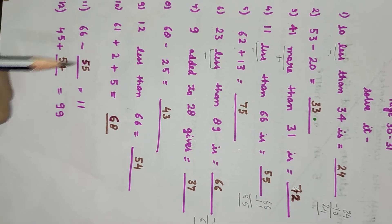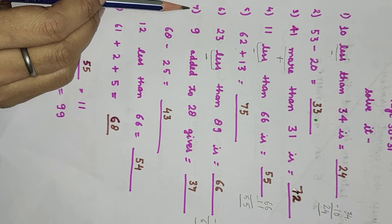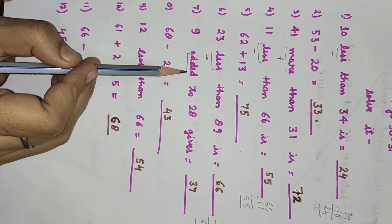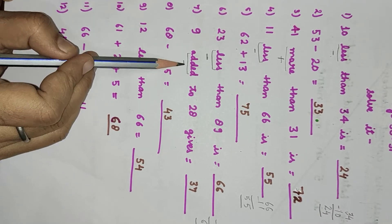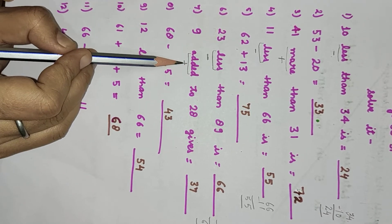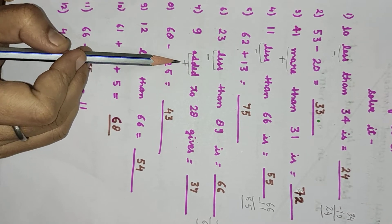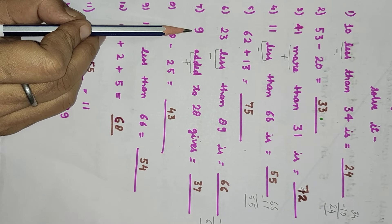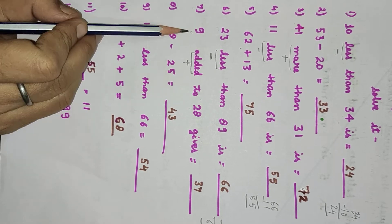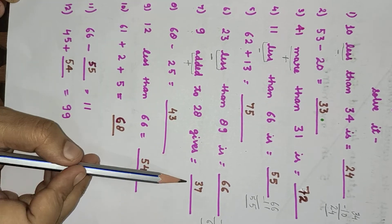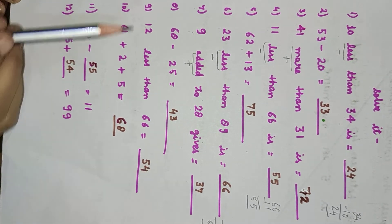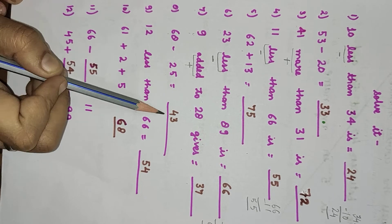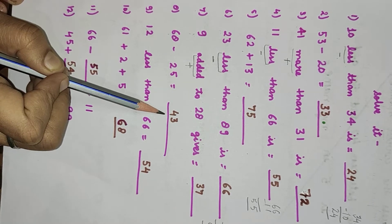Question number 7: 9 added to 28 gives. 'Added' means add — very simple. Added means add. 28 plus 9 will be 37. Next: 68 minus 25 will be 43.